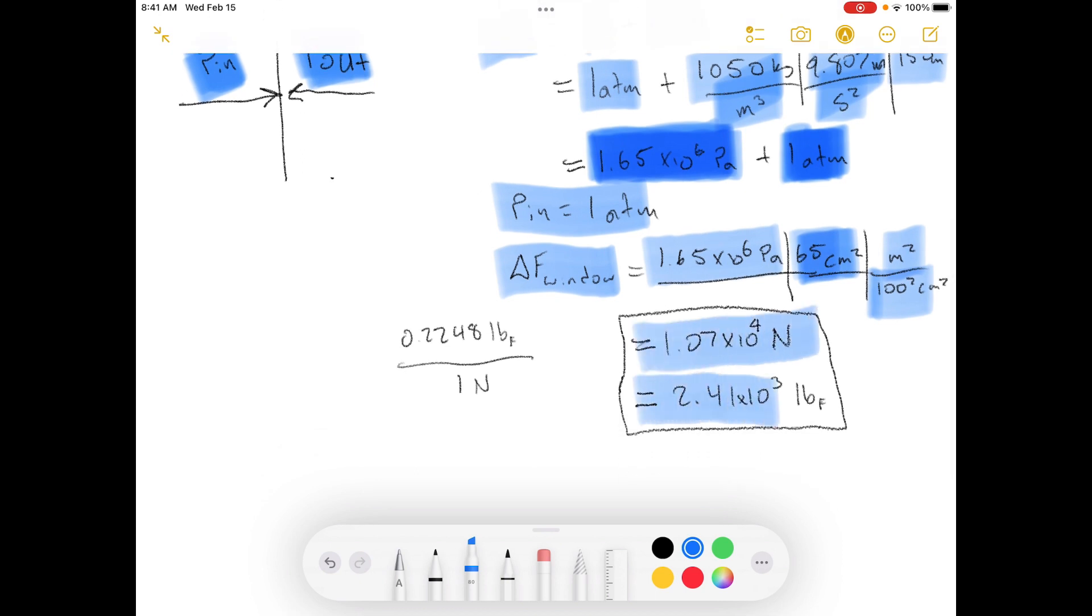And then we can convert that into pounds of force. So it's about 2,400 pounds. This is the conversion I used in order to convert between newtons and pounds force. And that is a lot of pressure that that glass has to maintain.